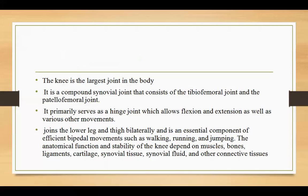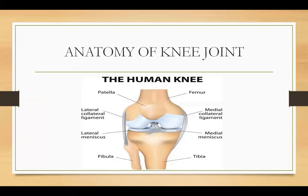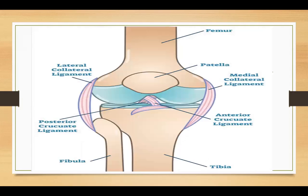The knee is the largest joint in the body. It is a compound synovial joint consisting of the tibio-femoral joint and the patellofemoral joint, and it primarily serves as a hinge joint. In this diagram you can see the bony anatomy of the knee joint — the distal end of the femur, the proximal end of the tibia, and the patella, that is the knee cap. You can also see the ligaments of the knee joint.